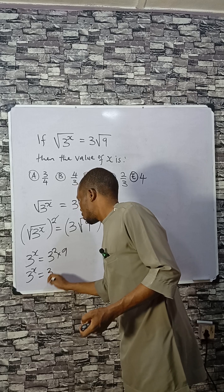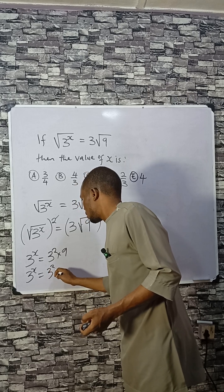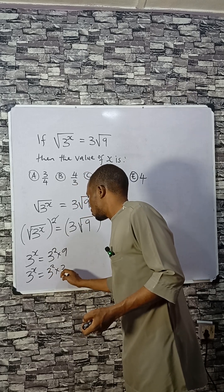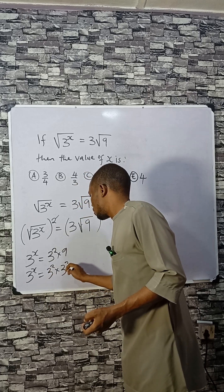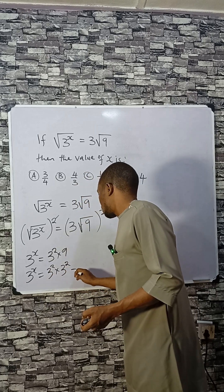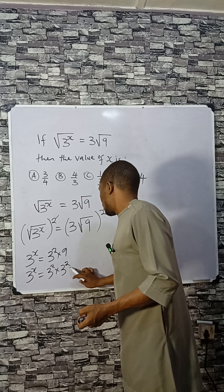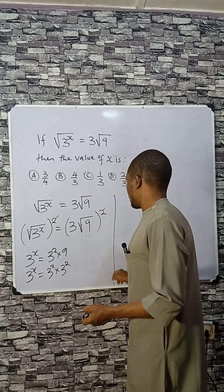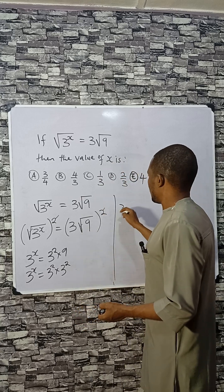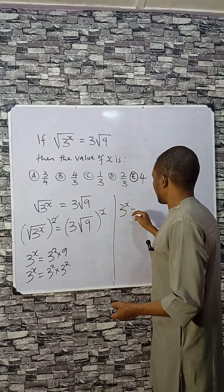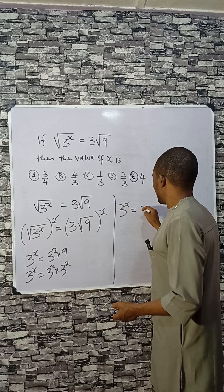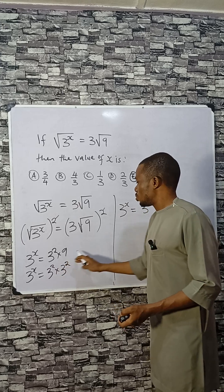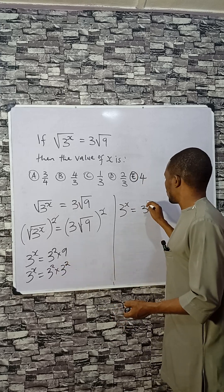So 3 squared is 9, and 9 is still 3 squared. You can write this as: 3x equals 3 raised to the power 2 plus 2, which is 4.